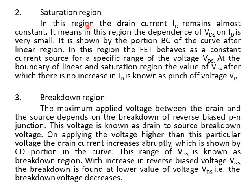Saturation region: In this region, the drain current ID remains almost constant. It means the dependence of VDS on ID is very small. This is shown by the portion BC of the curve. After the linear region, in the saturation region, the FET behaves as a constant current source for a specific range of voltage VDS.